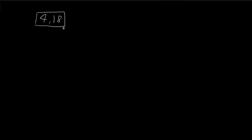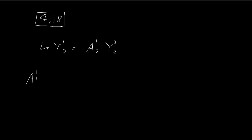Before we begin, I need to recall the result for question 4.18. If you haven't done this question, I suggest you do it. In that question, it tells us that if we apply the erasing operator to y12, we get an expression equal to some constant — I'll call it a12 — multiplied by y22. Question 4.18 tells us that the value of a12 is given by a specific formula.